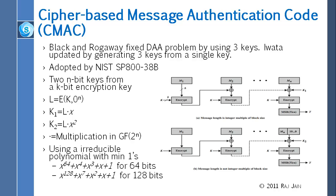There are two ways to fix it. The fix is called CMAC. CMAC was proposed by Black and Rogaway. They fixed that problem by using three keys. Instead of just one key, use three different keys: one key here, then another key k1 at the end — k1 if the message is an integer multiple of the block size with no padding, and k2 if there is padding. So there are three keys: k, k1, and k2.